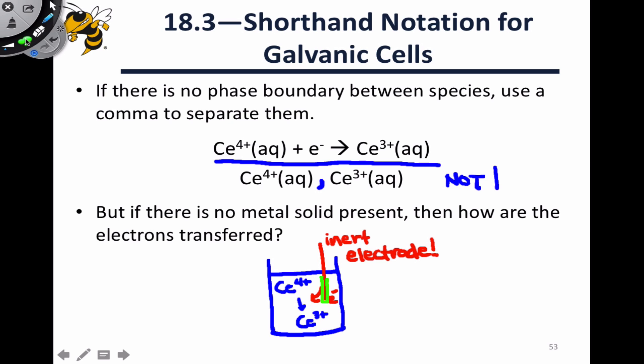And so, to write the cell notation for this half cell, we would include the Ce4+, and the Ce3+, with a comma separating them like so. And then we would use a vertical bar to indicate the phase boundary, and we would write the composition of the inert electrode immediately after that. For example, platinum metal is a common choice, and we could write Pt solid to indicate that the inert electrode is made of platinum metal.